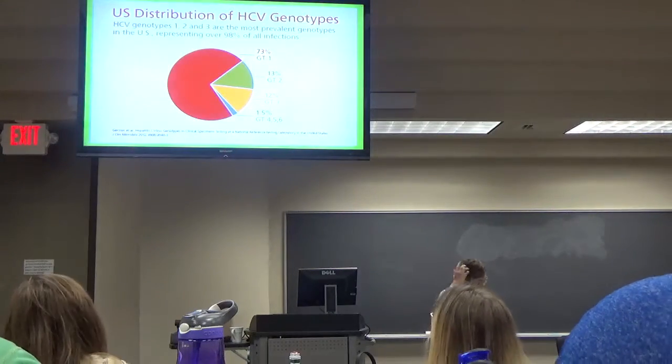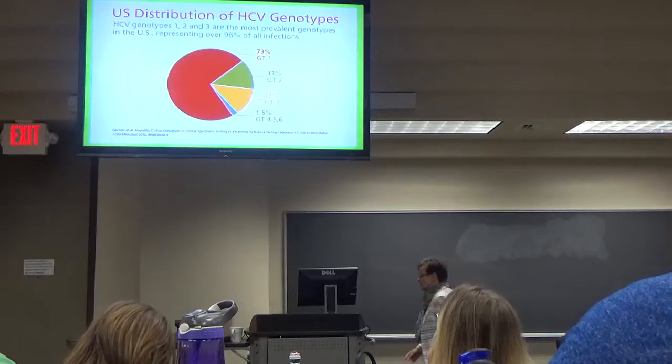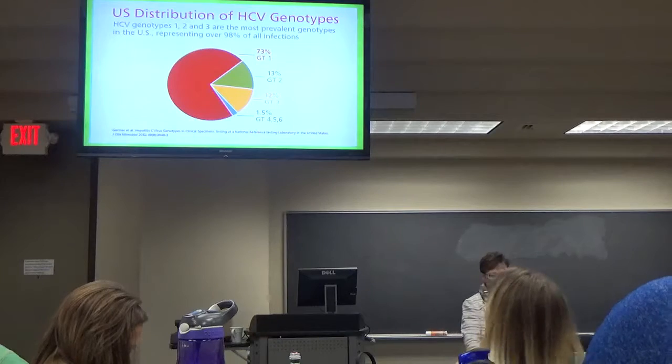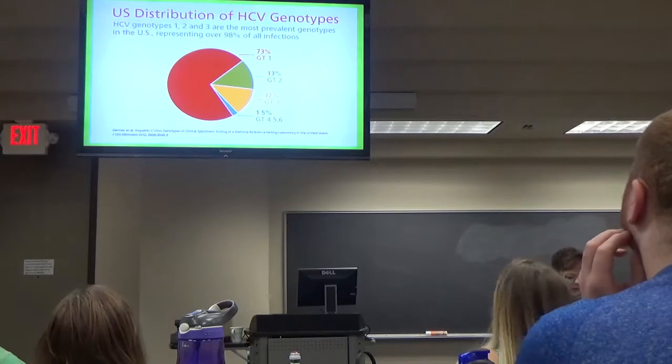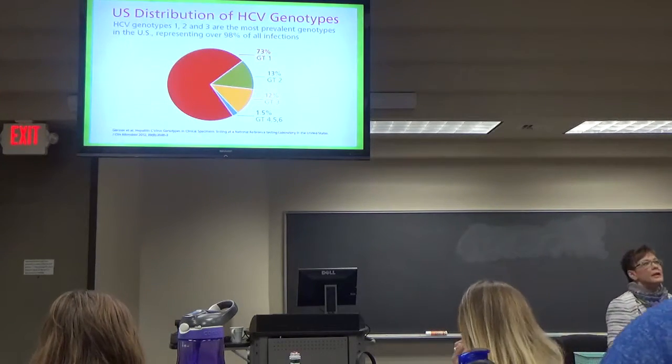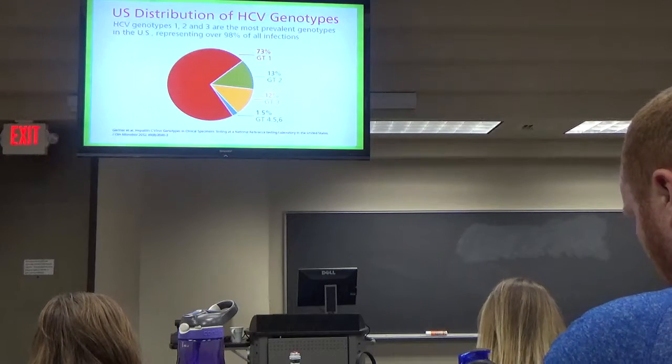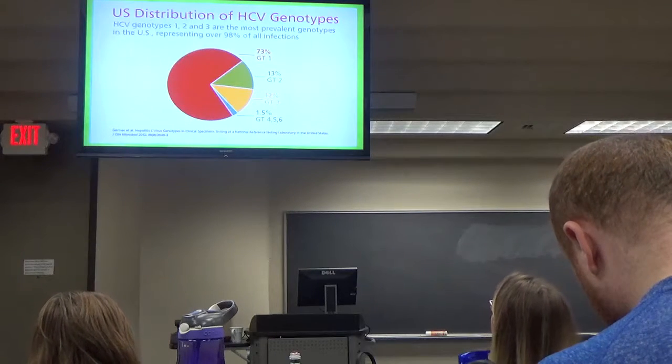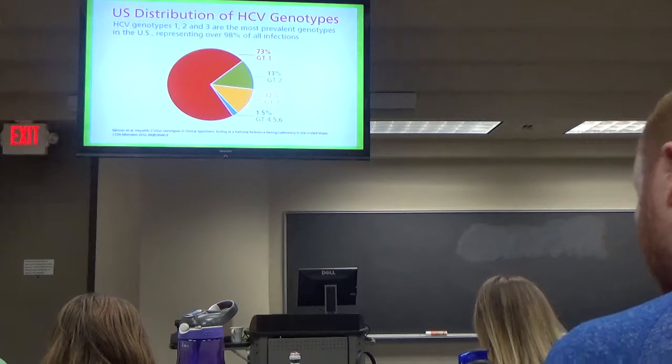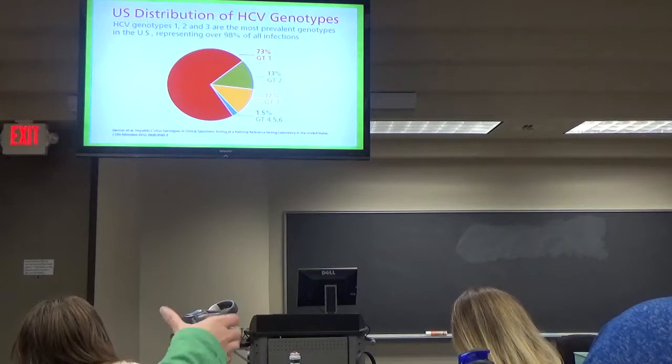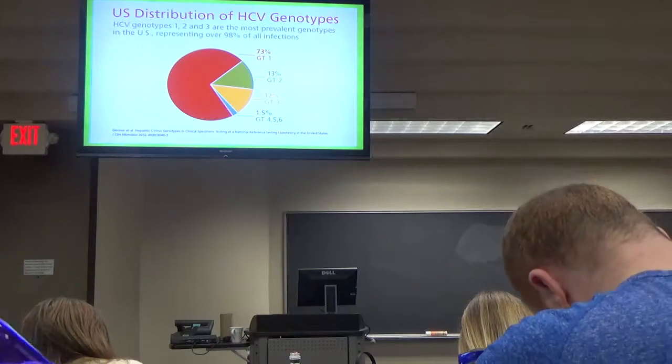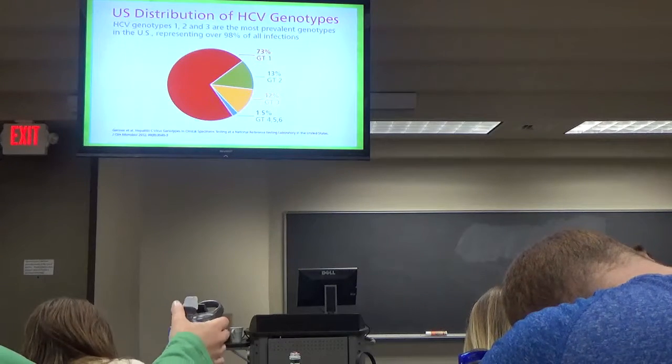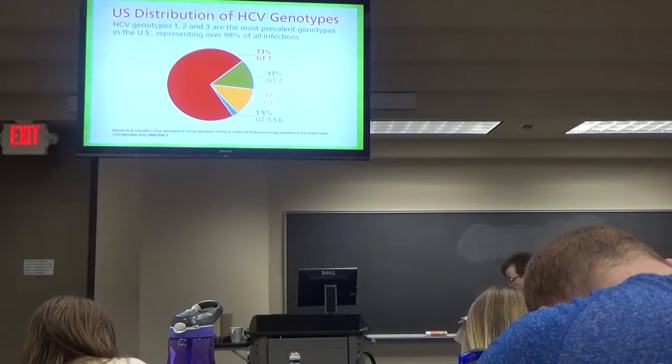So here's the distribution of genotypes in the United States, so you can see about seventy-five percent. It's genotype 1, and 2 and 3 are then about twenty-five percent. Those are the three I'm going to have you learn the drugs for. 4, 5, and 6 are very rare, at least here. Now they may not be for people coming from other parts of the world. Africa, you see those other genotypes much more commonly.